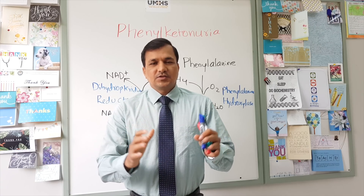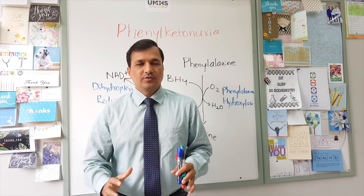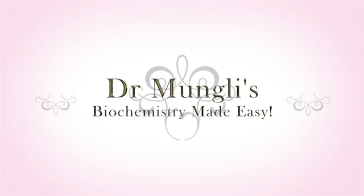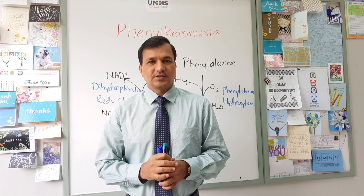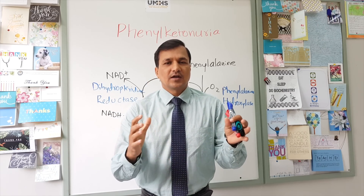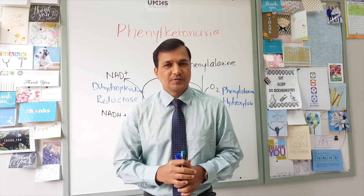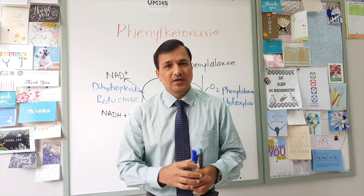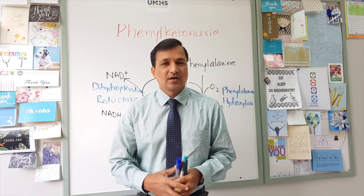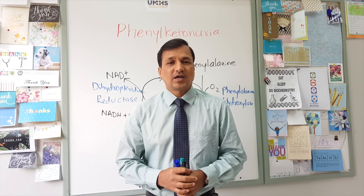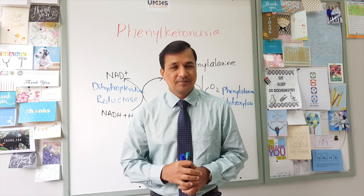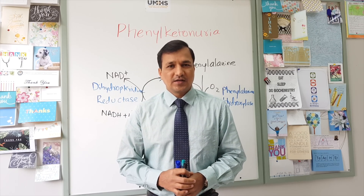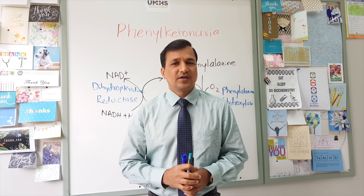In this video, I will be explaining phenylketonuria. There are different varieties of phenylketonuria, which we can classify into: classical phenylketonuria, variant phenylketonuria, non-phenylketonuria hyperphenylalaninemia, and malignant hyperphenylalaninemia. The most common out of all these is classical phenylketonuria, which is caused by a deficiency of an enzyme called phenylalanine hydroxylase.